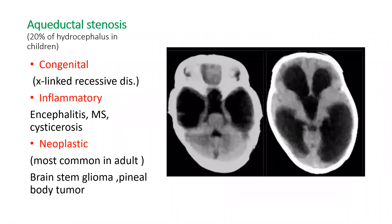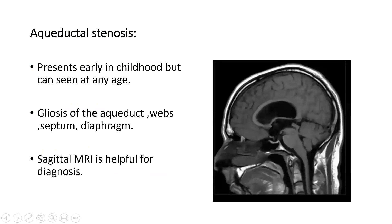Aqueductal stenosis accounts for 20% of hydrocephalus in children and could be congenital X-linked recessive disease, inflammatory encephalitis, MS, cystic gliosis, or neoplastic — most commonly brainstem glioma or pineal body tumor in adults. Imaging shows dilatation of lateral and third ventricles while the fourth ventricle is normal. Aqueductal stenosis is present early in childhood but can be seen at any age. Causes include gliosis of the aqueduct, web, septum, or diaphragm. Sagittal MRI is helpful for diagnosis.